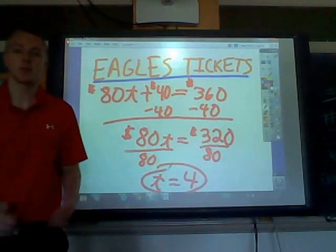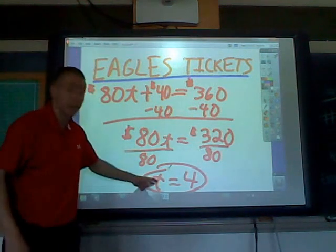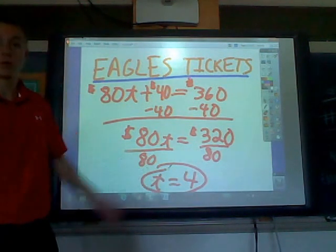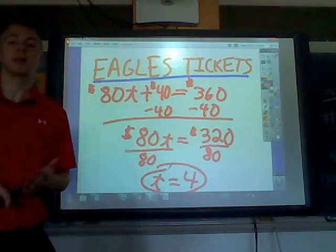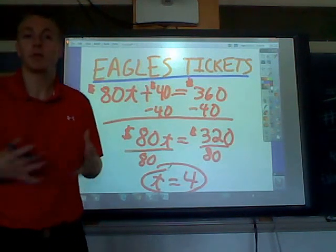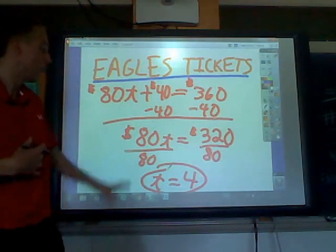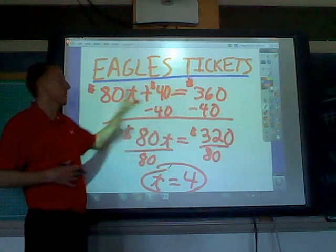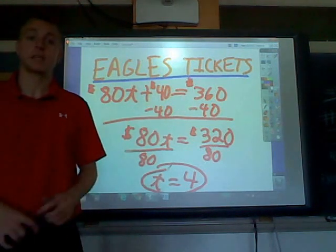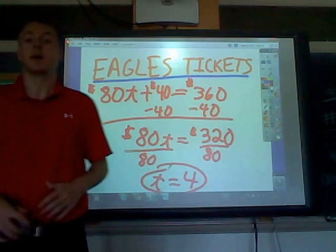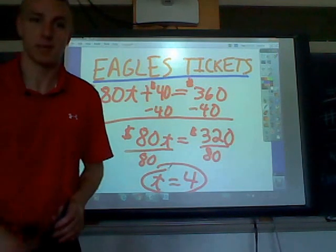What does that mean? I just want to show you how this is used in real life. With the $360 you have, you can bring 4 people total. So if you're trying to figure out how many people you can bring to a football game including yourself, with $360 at these prices, the answer is 4 people. That's a little lesson on solving two-step equations and how it's used in real life. Thank you very much for listening.